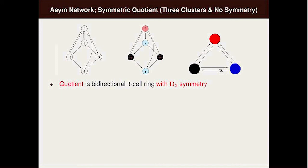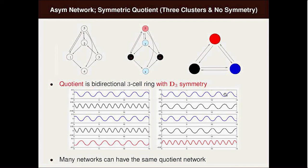There are a couple of theorems associated with this. Namely, every admissible vector field with respect to the left picture restricts to an admissible vector field in the bidirectional ring, and every admissible vector field in the bidirectional ring lifts to an admissible vector field here. So if I know something about the dynamics of the quotient, then I can conclude things about the dynamics of the original network.